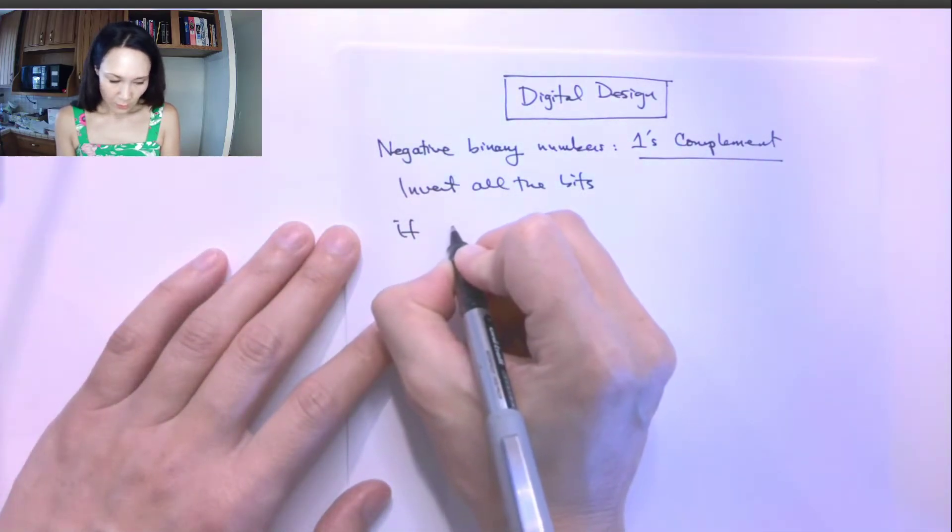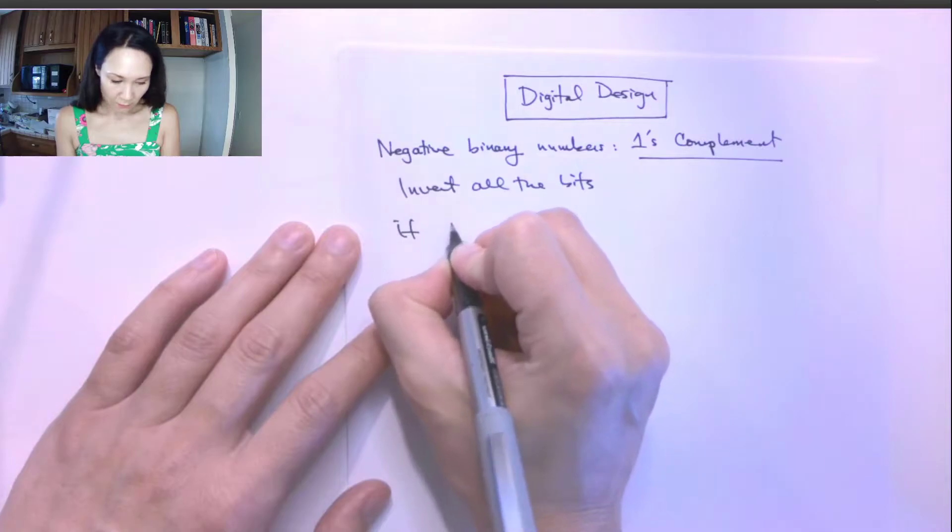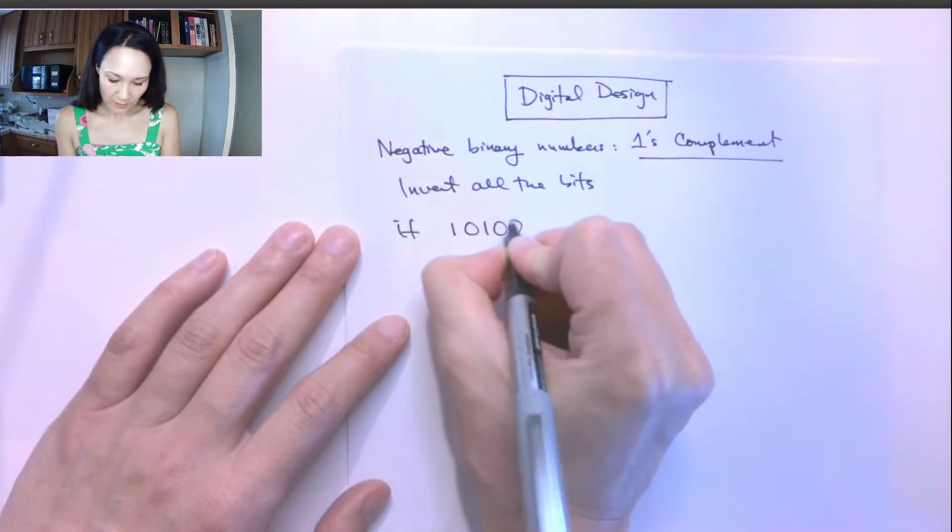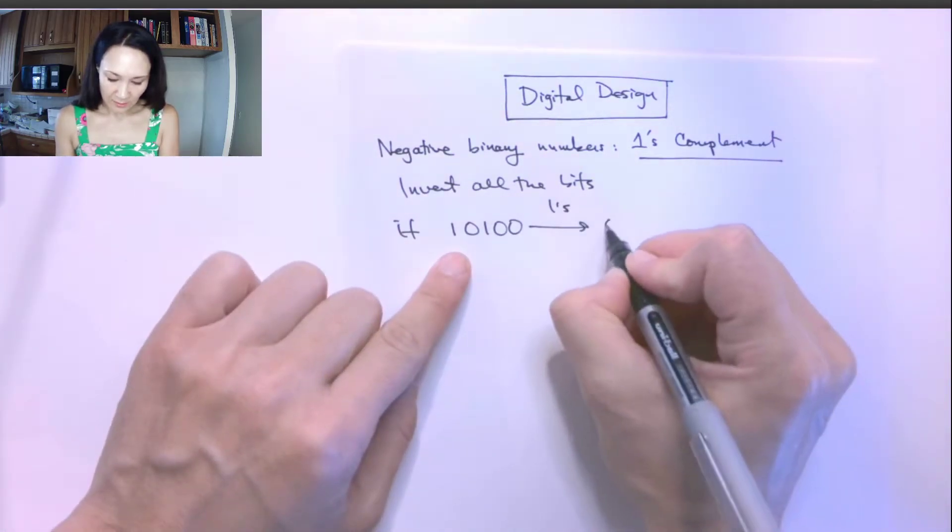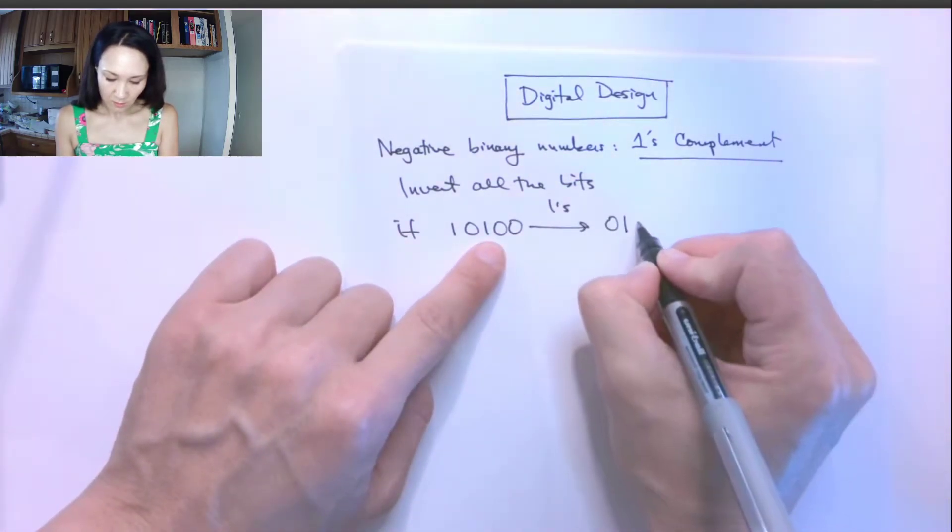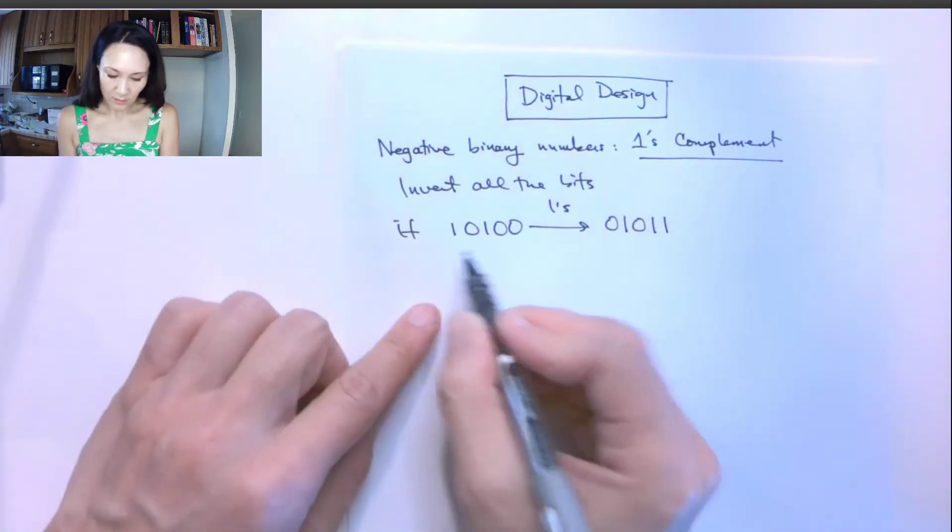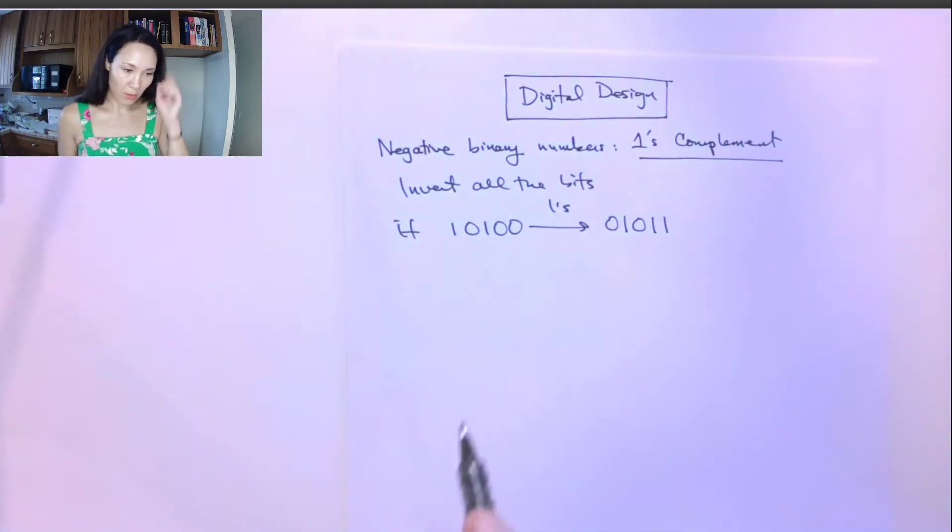If we want to do one's complement of 10100, one's complement of that would be 01011. So wherever you see a one, you just change it to a zero. Wherever you see a zero, we just change it to a one.